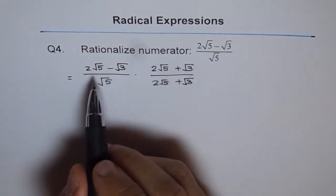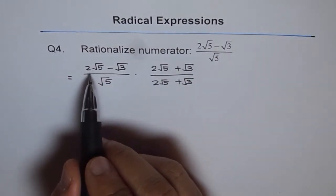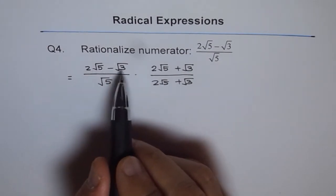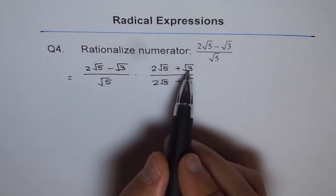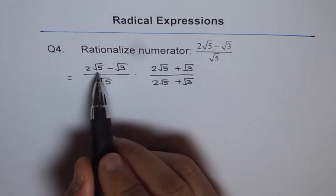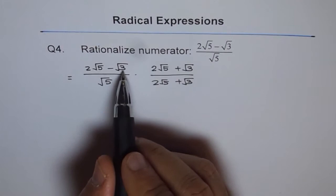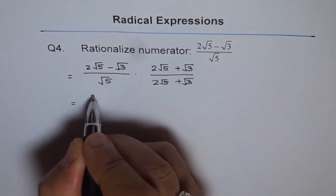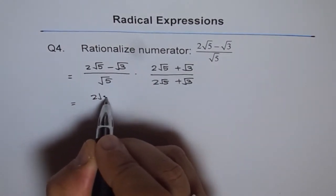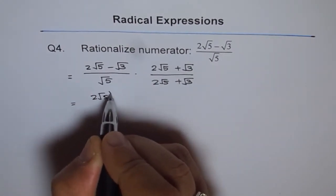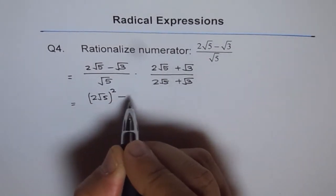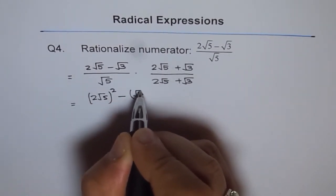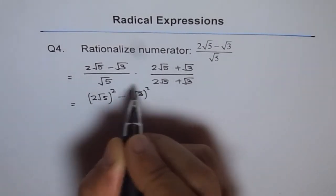The idea is: when you multiply two terms like (a minus b) times (a plus b), you get a squared minus b squared. So in the numerator, you get 2 square root 5 squared minus square root 3 squared.